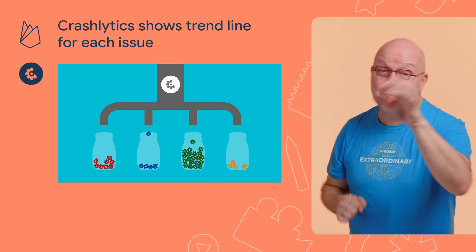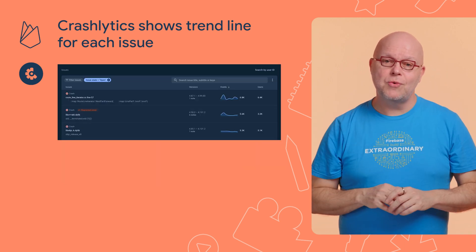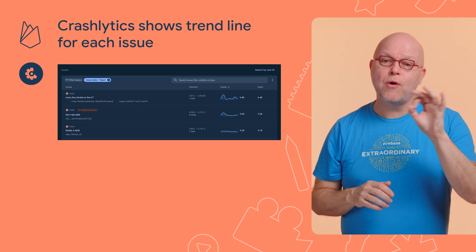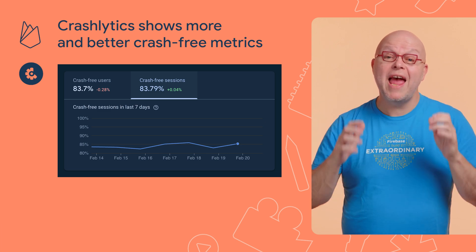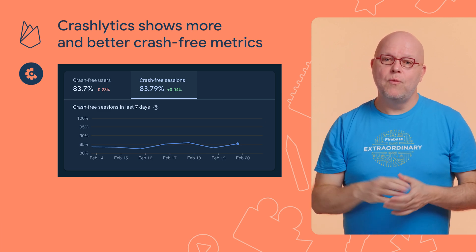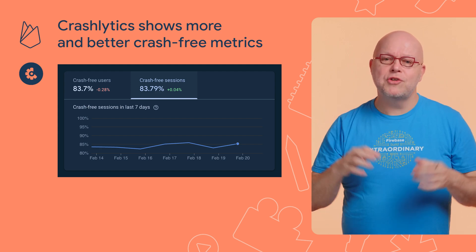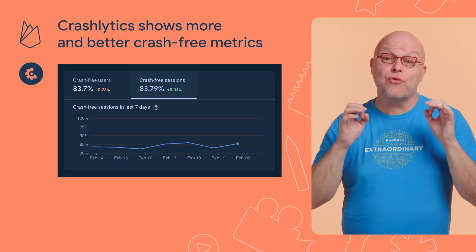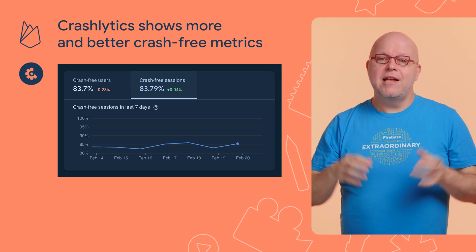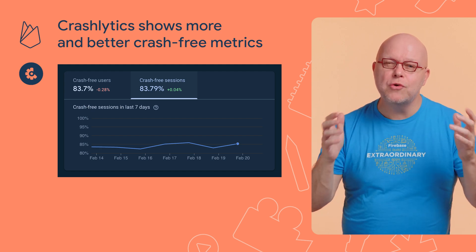We're finishing this episode with some updates to Crashlytics. The Crashlytics panel in the Firebase console now shows a chart within each row of the issue list to help you understand how that issue is trending over time. We've also improved Crashlytics to provide more and better crash-free metrics. You can zoom in on the crash-free user data for the past 24 hours to see additional details, and we added information about crash-free sessions, as you can see here. Sessions without crashes indicate the overall reliability of an app and build user confidence.